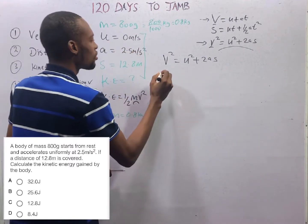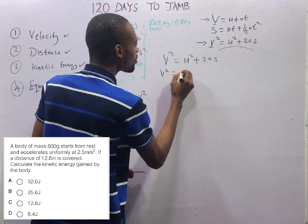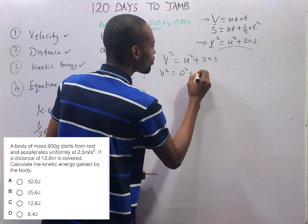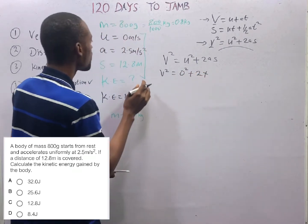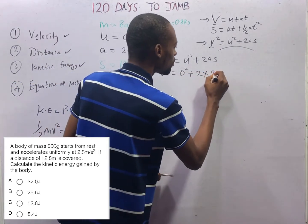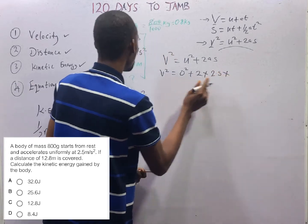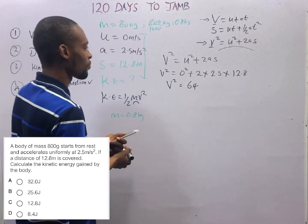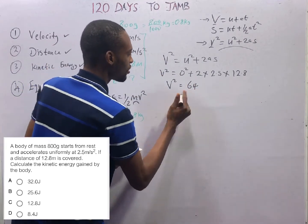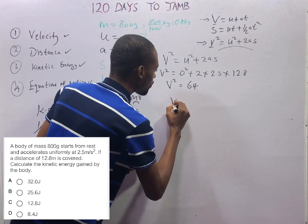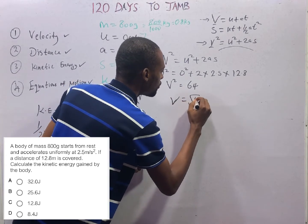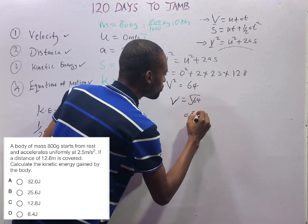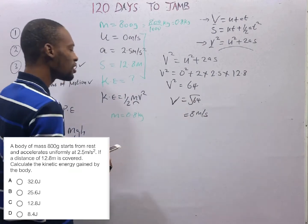u is 0. So v² = 0² + 2 × a, 2.5 × s, 12.8. V² equals 64. V will simply be the square root of 64. That is equal to 8 meters per second. This is the velocity.